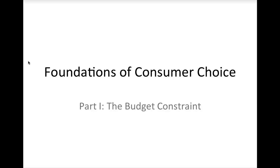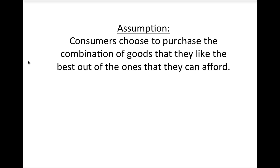Today, we are going to begin building our model of how consumers make decisions. Ultimately, we will use this model to generate estimates of consumers' market demand and to predict the outcomes of market interactions between producers and consumers. Models of consumer decision-making in economics are based on the assumption that consumers are rational, which means that they choose the combination of goods that they like the best out of the ones that they can afford.